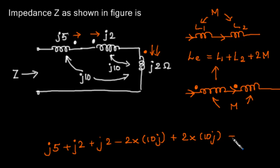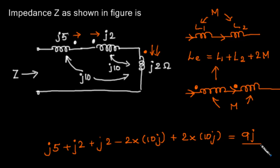So the total impedance: we have minus 20j and plus 20j which cancel each other out. We are left with 2j plus 2j plus 5j, which equals 9j. This is the impedance. Note that no mutual inductance is given between j5 and j2, so we do not need to consider that case.